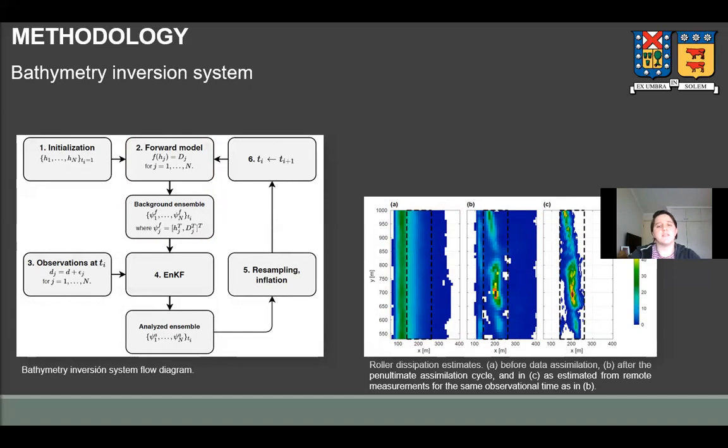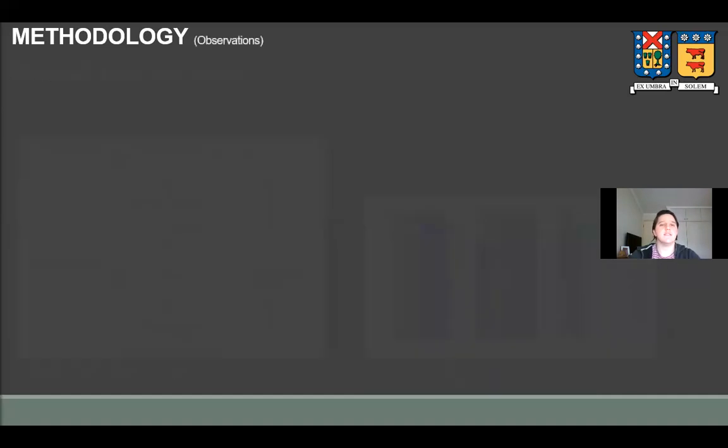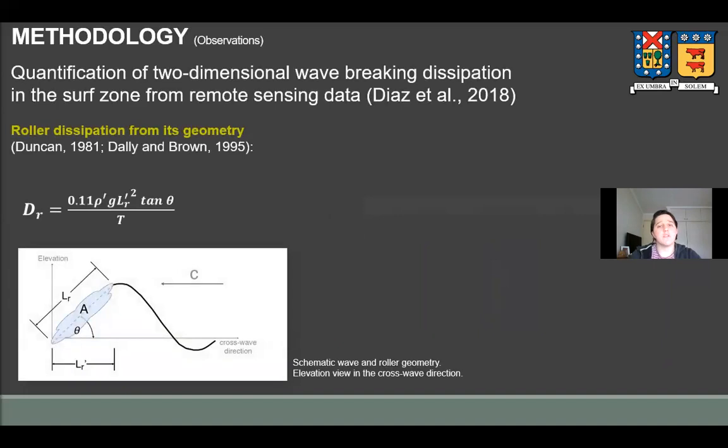Now, to quantify wave breaking dissipation from remote sensing data and get estimates of the one shown here at far right, we follow the approach of Diaz et al. 2018. Their work is based on remote estimations of roller lengths in the wave propagation direction that are then coupled to Duncan's model for rollers in equilibrium.